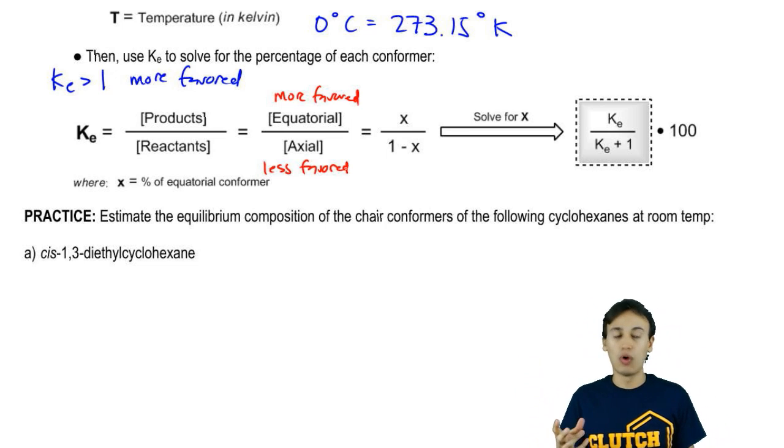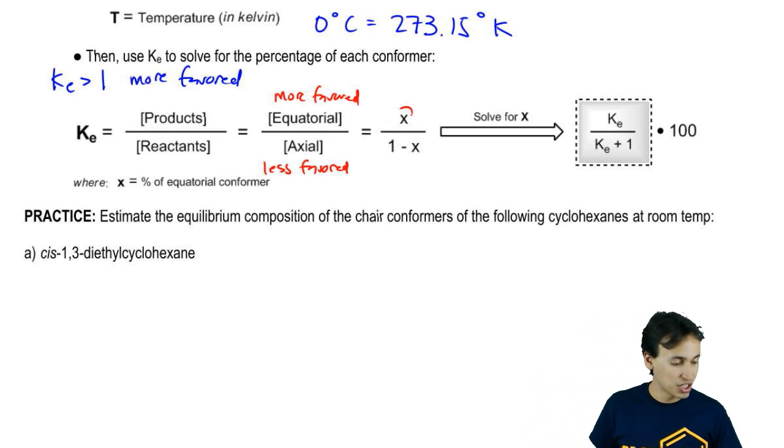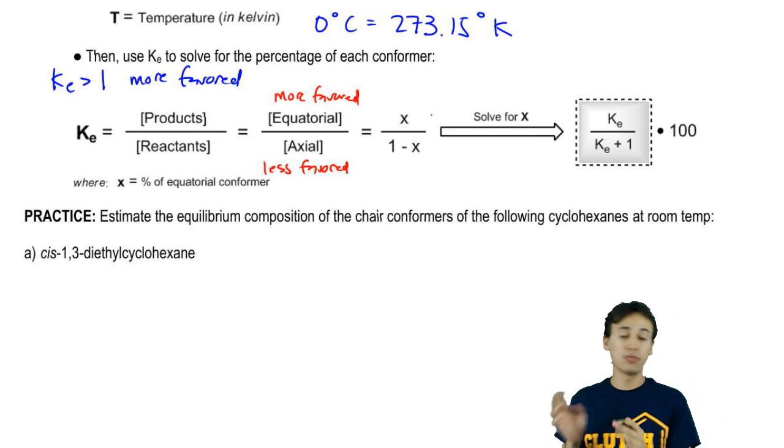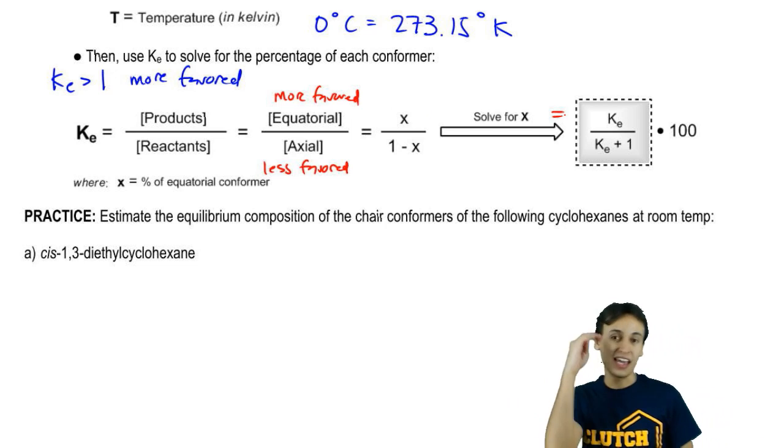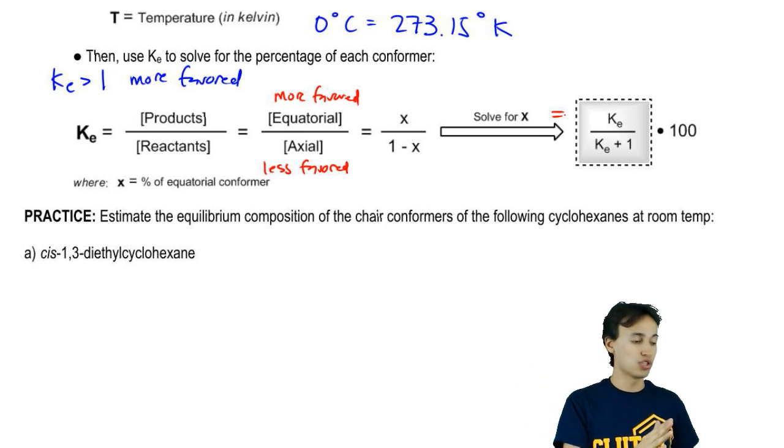Then we don't really want KE here. We want x because we're really trying to figure out how much of this product we're going to get, right? So if we solve for x - I did that for you - what you're finally going to get is that x is equal to KE over KE plus 1. And if you want to put it in a percentage term, it's times 100.